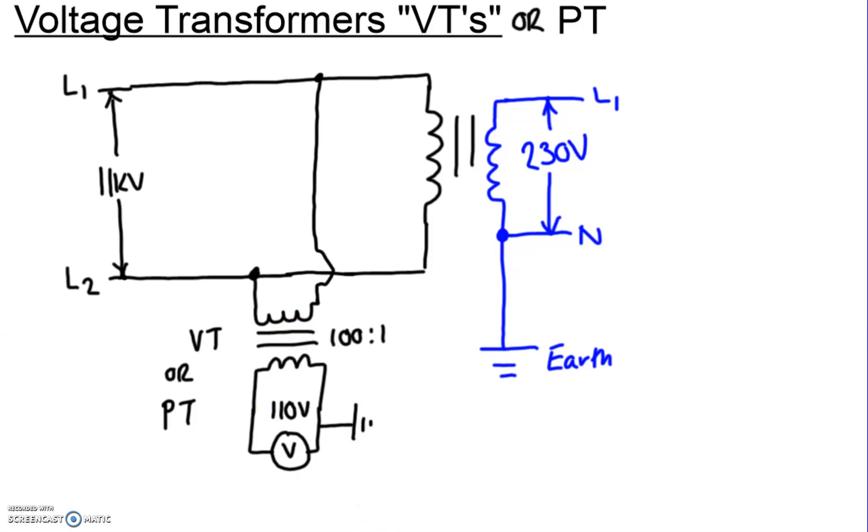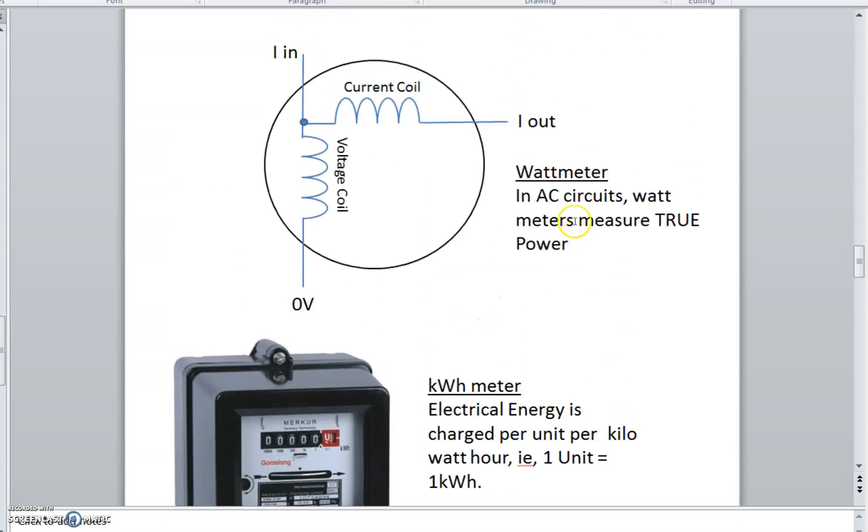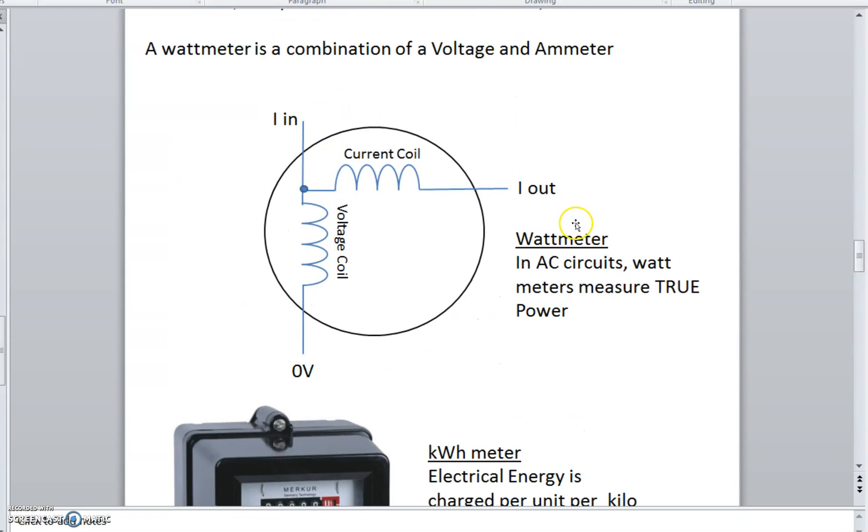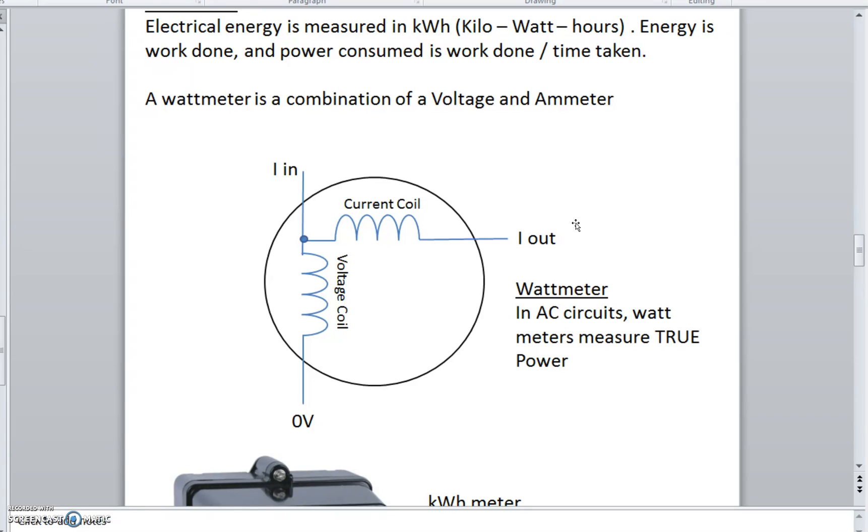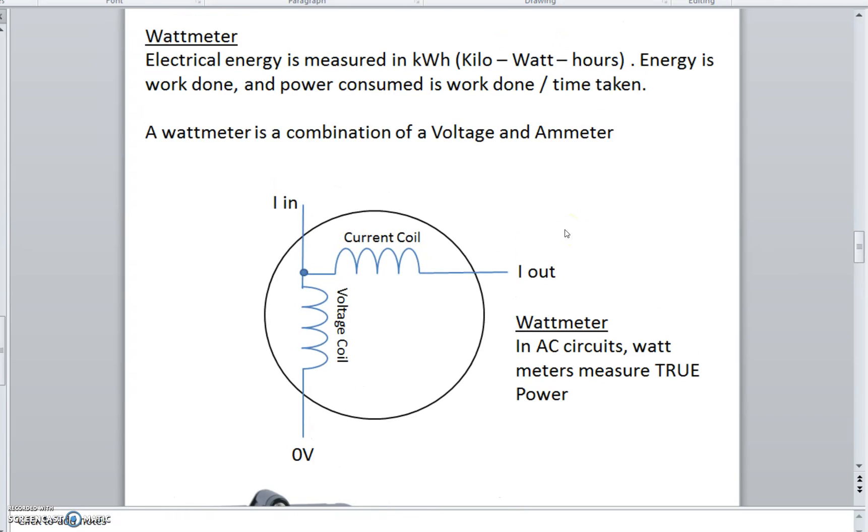I've got another document here about the wattmeter. So wattmeters measure true power. And in industry and homes in general, electrical energy is measured and it's purchased in kilowatt hours. So that's the amount of energy we are using per hour.